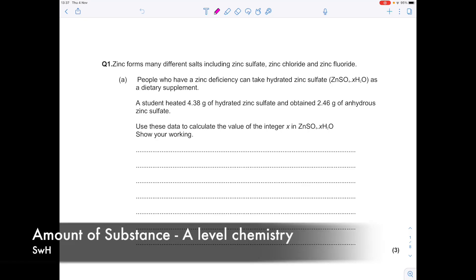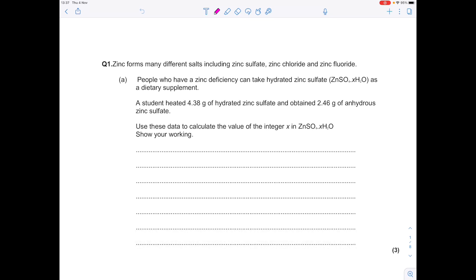Today I'm answering a selection of A-level chemistry stoichiometry questions. So question 1. Zinc forms many different salts including zinc sulfate, zinc chloride and zinc fluoride. People who have a zinc deficiency can take hydrated zinc sulfate as a dietary supplement.